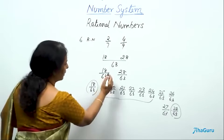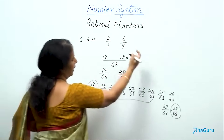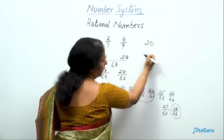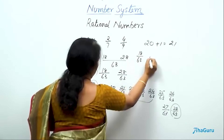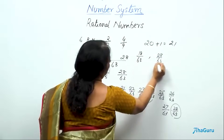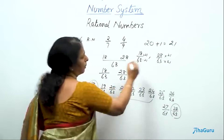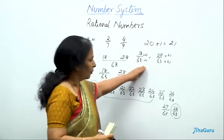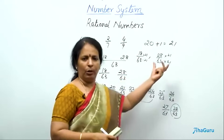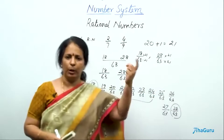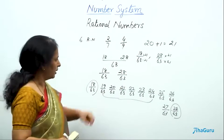Between 18/63 and 28/63, I can use the same format. If I need 20 numbers, I add 1 to that and multiply both fractions by 21. With 21 in the denominator multiplied through, you get bigger fractions with many numerators in between. Choose any 20 of your choice.